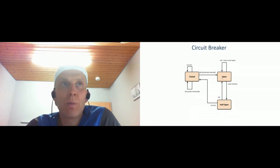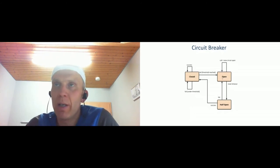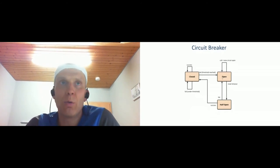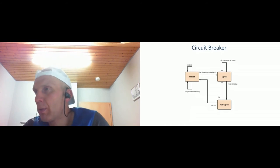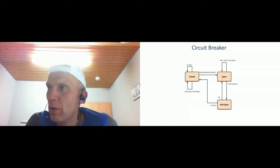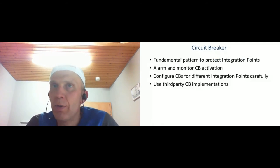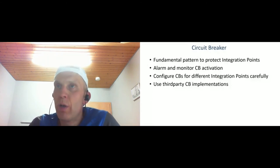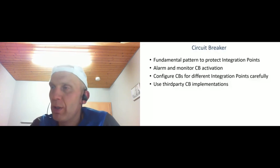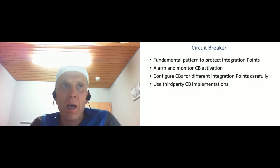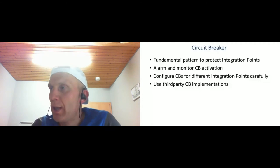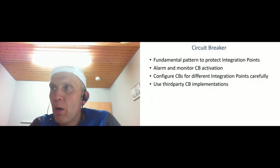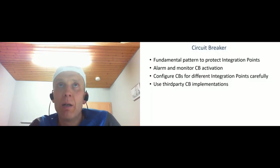Circuit breaker is a fundamental pattern to protect your integration points. It makes sense to configure alarms and monitor circuit breaker activation — if circuit breaker is active on the monitoring system, then very probably something is happening with the target system. There are a lot of configuration parameters: you can configure a threshold, a timeout, a number of threads, and the time when the circuit breaker goes into half-open state. It makes sense to configure parameters manually for each endpoint and tune them, since different endpoints have different loads. Nice circuit breaker implementations include Netflix Hystrix — which is no longer supported but still works very stably — or you can use Resilience4j for the latest things. I'll make a short demo of how circuit breaker works.